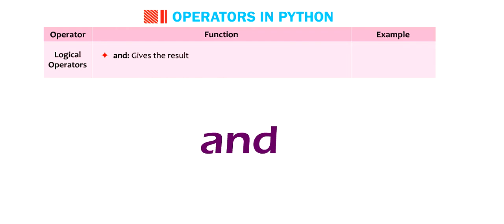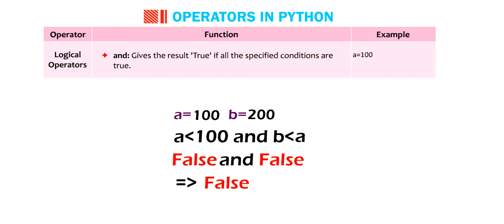And gives the result true if all the specified conditions are true. A equals to 100. B equals to 200. A smaller than 100 and B smaller than A. False and false equals to False.